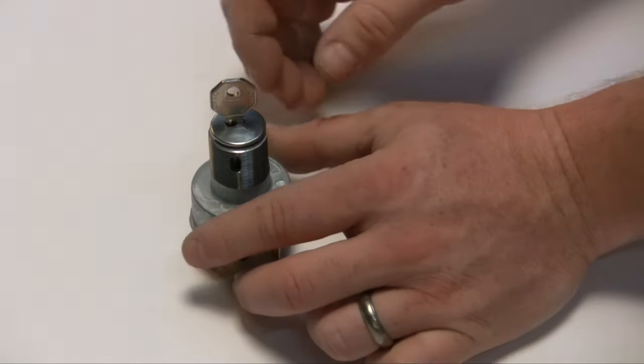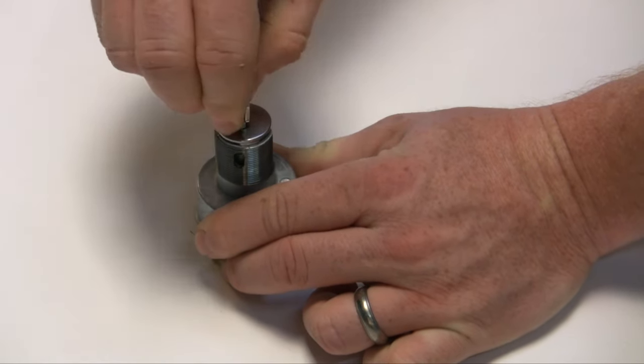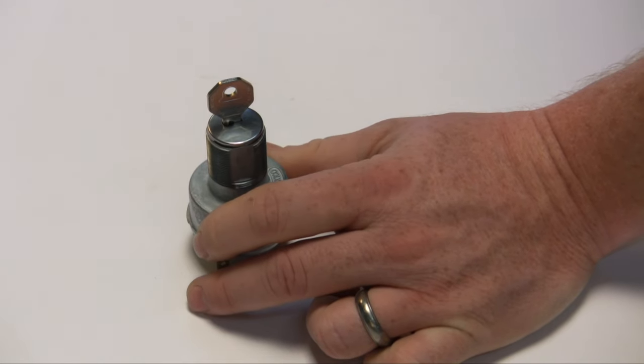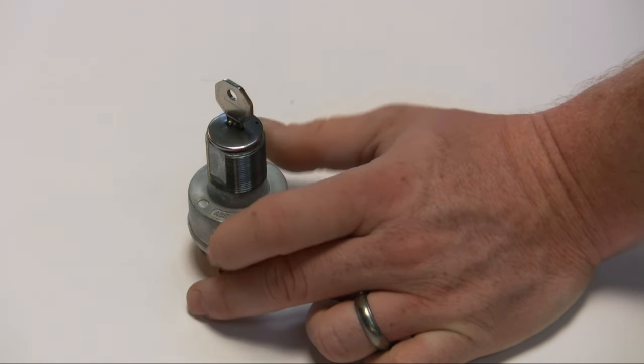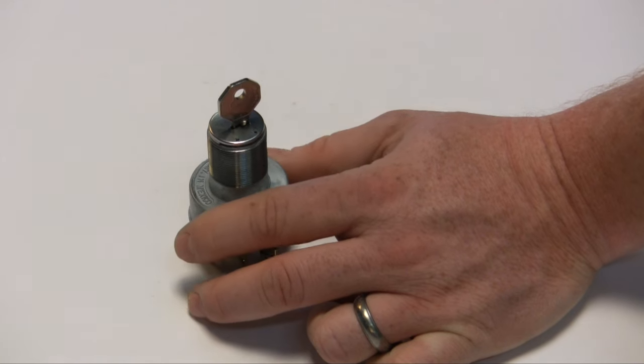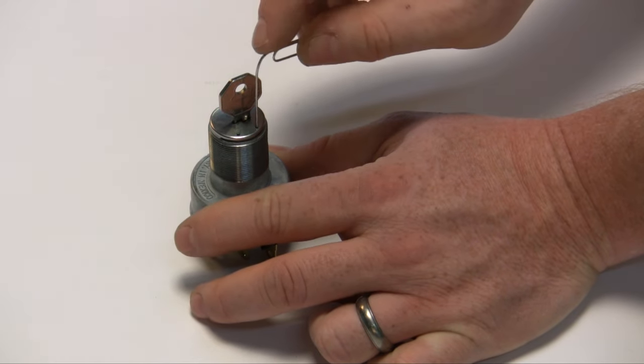You're going to make sure it's in the full accessory position, that's full counterclockwise until it stops. And you're going to grab the bottom hole to release the tumbler, same as the one with the finger guard.